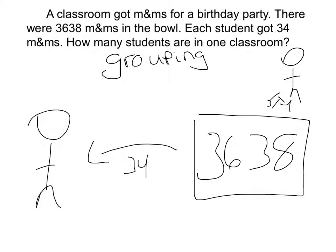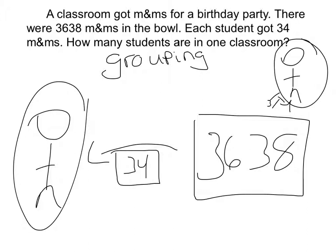It's grouping because each student kind of acts like a group. In grouping they tell you the value of each group but they don't tell you how many groups there are. And here they're asking how many students are there.